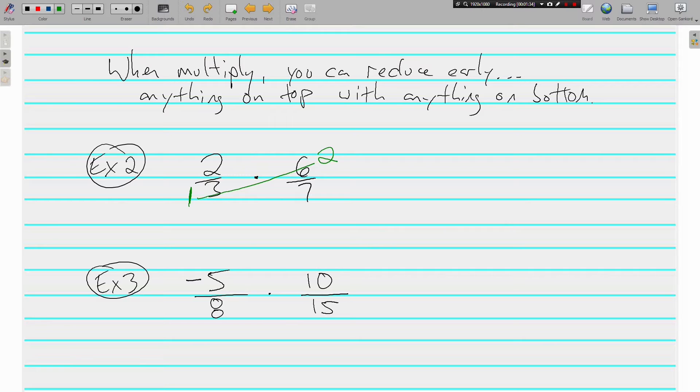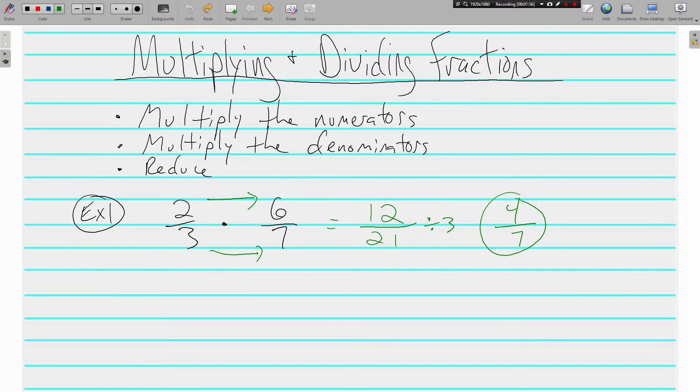So now instead of multiplying the 2 times 6, I'm going to do the 2 times 2 which is 4. Instead of multiplying 3 times 7, I'm going to do 1 times 7 to get 7. 4 7ths, which if you notice is the same answer as example 1.